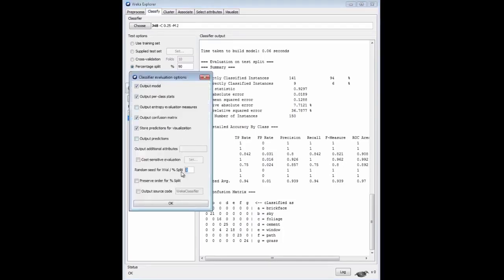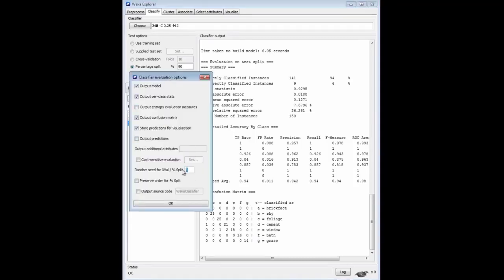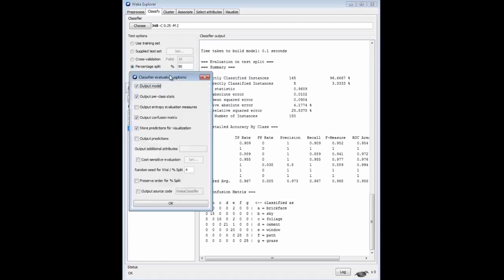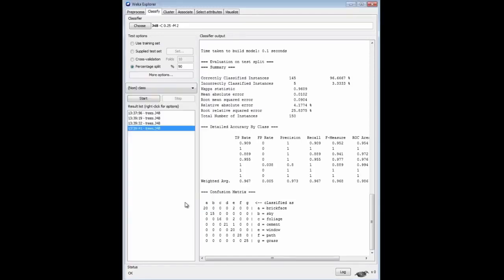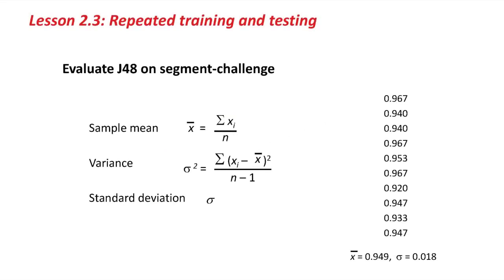Before, we got 0.967, and this time we get 0.94 — 94%. Quite different. If I change the seed to 3 and run it again, I get 94% again. Changing to 5, I get 95.3%. If we run it 10 times, we get a set of results. Given this set of experimental results, we can calculate the mean and standard deviation. The sample mean is the sum of all these success rates divided by 10. That's 0.949 — about 95%. That's a better and more reliable estimate than the 96.7% we started with.